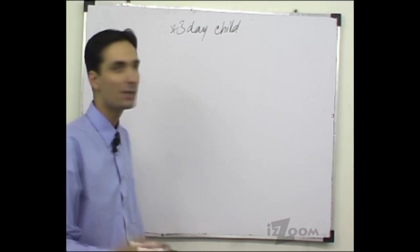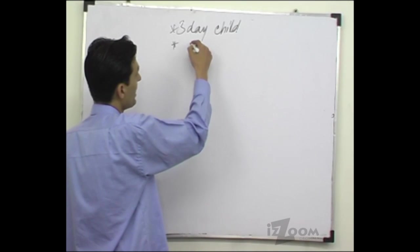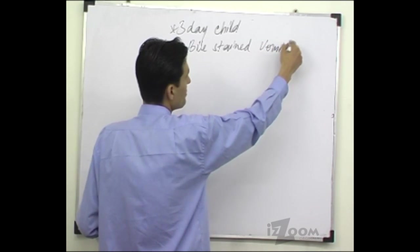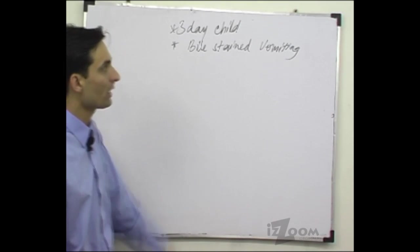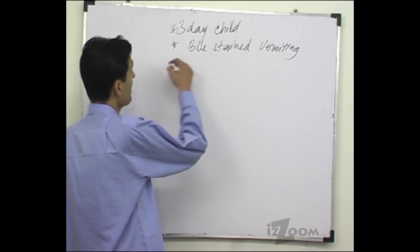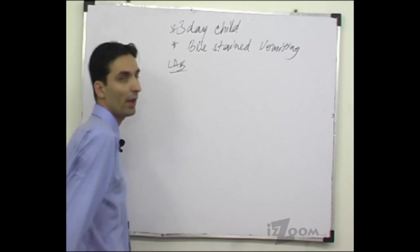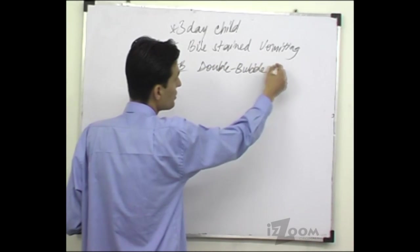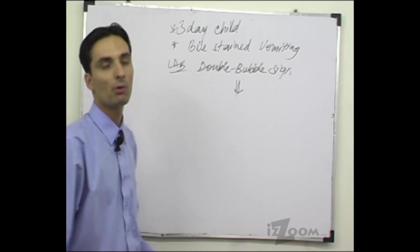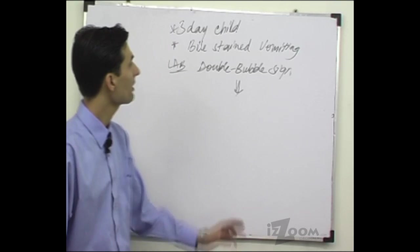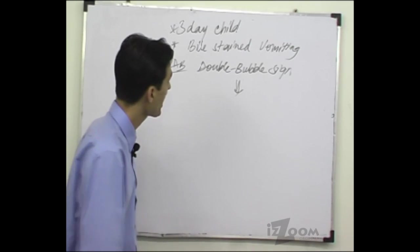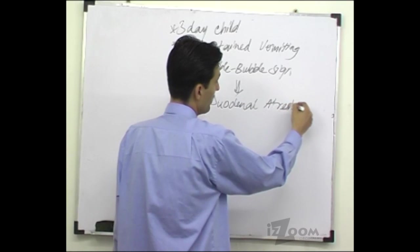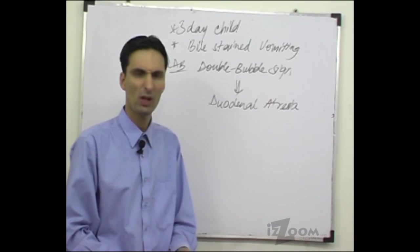Another case: a three-day-old neonate presents with bilious vomiting — bile-stained, greenish-colored vomiting. On abdominal X-ray, you find a double bubble sign. The most likely diagnosis in a three-day-old with bilious vomiting and a double bubble sign on abdominal X-ray is duodenal atresia.